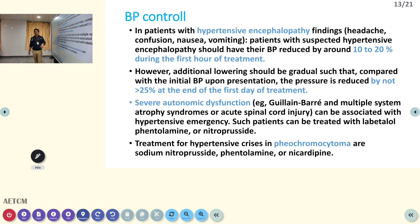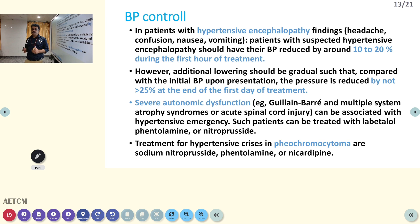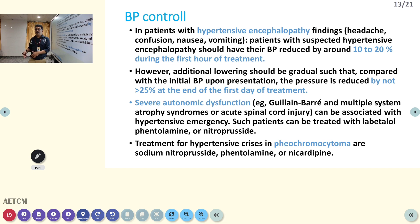Some patients can have severe autonomic dysfunction — such as those with Guillain-Barré syndrome or multiple system atrophy — who can have high BP with tachycardia and sometimes low BP with bradycardia; the same patient can have both during their hospital stay. We should not reduce the BP with routine drugs in these cases. Labetalol will be a better choice — if a Guillain-Barré syndrome patient presents with shooting BP, tachycardia, and ECG changes followed by bradycardia or hypotension, that indicates autonomic dysfunction.